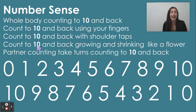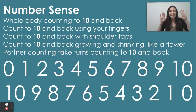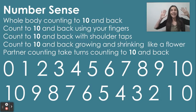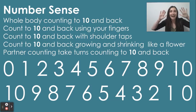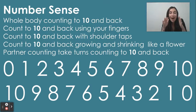Count to 10 and back growing and shrinking like a flower. So ready? Start really small for 0. 0, 1, 2, 3, 4, 5, 6, 7, 8, 9, 10. 10, 9, 8, 7, 6, 5, 4, 3, 2, 1, 0.